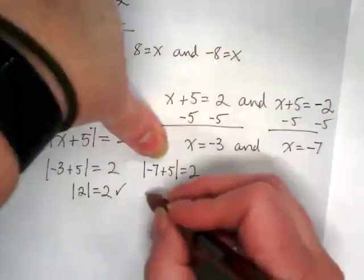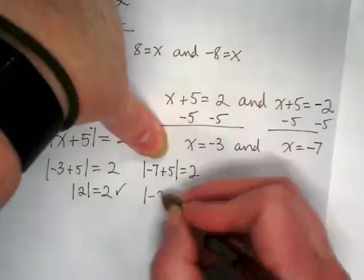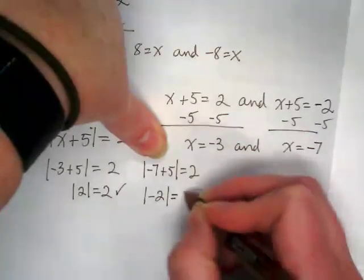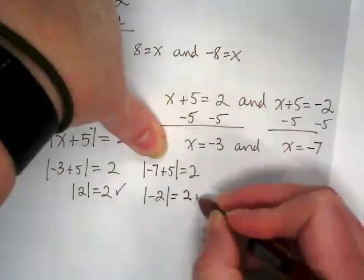Negative 7 plus 5, what kind of 2 does that give us? Negative 2. Is negative 2 absolute value equal to 2? Yeah. So it checks.